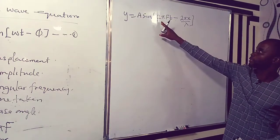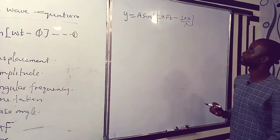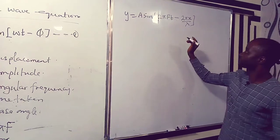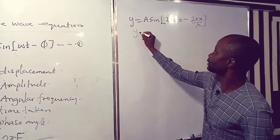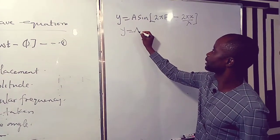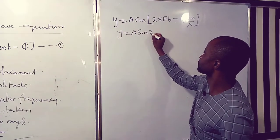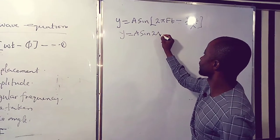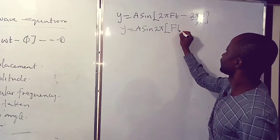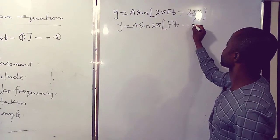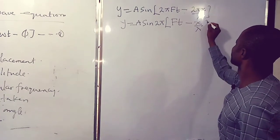The common factor here is 2π. Now factorize the equation. And then we have y equal to A sine 2π, open bracket, ft minus x over lambda.